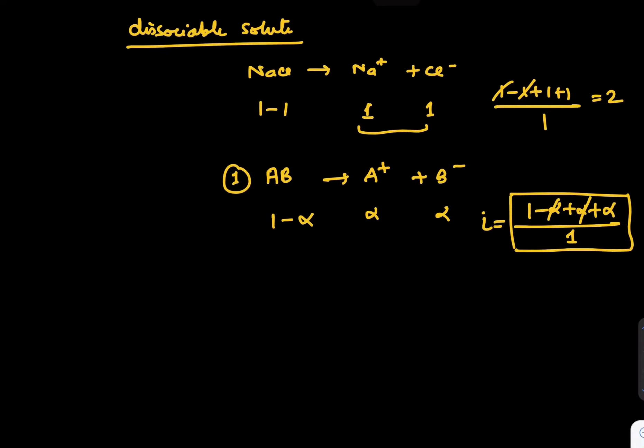Just for practice, I want to give one question to you. Let us take Al2SO4 whole thrice which decomposes 60%, find out its I. How to proceed? I'll say it breaks as 2 Al3+ plus 3 SO42-.